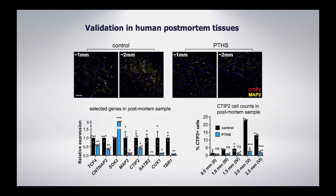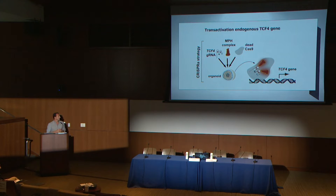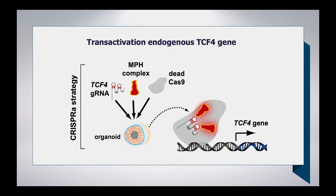Showing phenotypes in a cellular model is interesting, but we are very translational — we want to do something about it for the families. Since TCF4 is mutated in one copy while the other is highly functional, we asked: what if we can compensate the haploinsufficiency by overexpressing the non-mutant version? We used a CRISPR activator that binds to the TCF4 promoter to force expression and compensate. This transactivation approach was able to restore the level of TCF4 inside these organoids.